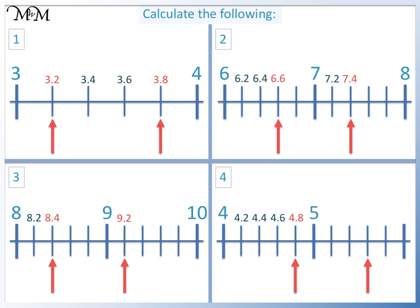Counting on from 5, we have 5.2, 5.4, and 5.6. The final numbers on the scale are 5.8, and 6.